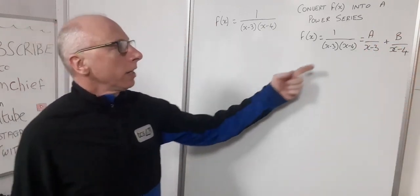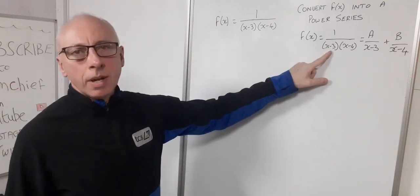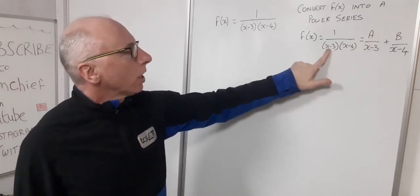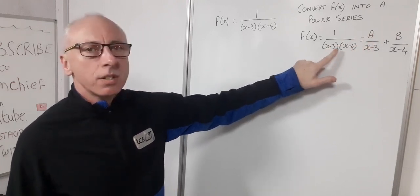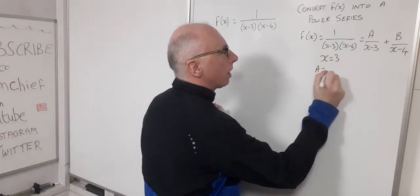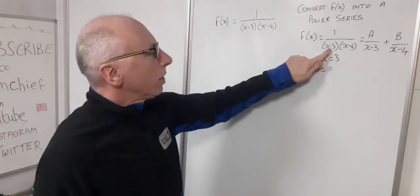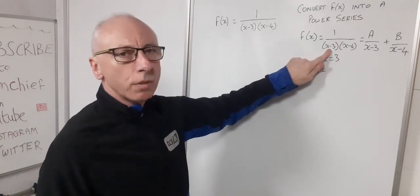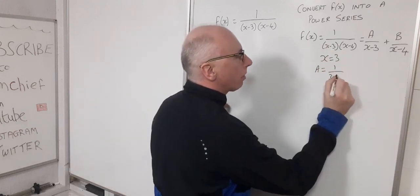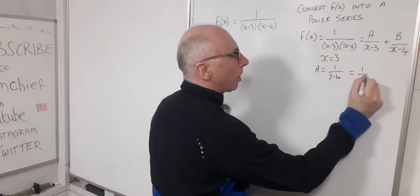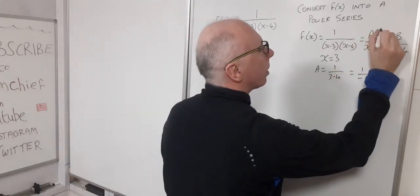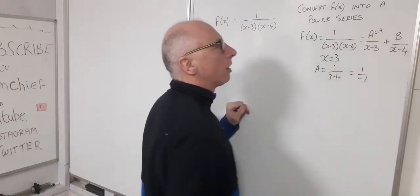The simplest way to break this down is to use the cover-up method. To find A, we just plug in x = 3 and see what's left over. The B term disappears — hence the cover-up method. Plugging in x = 3: A = 1 / (3-4) = 1 / (-1), so A = -1.